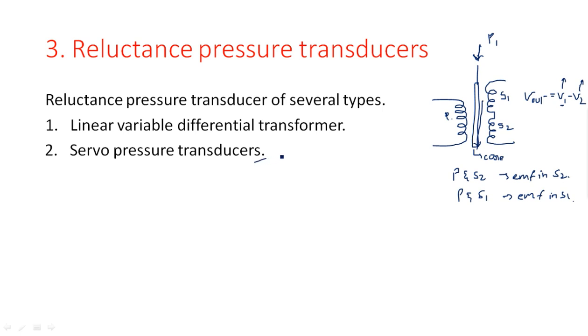Servo pressure transducers use a servo mechanism — a rotational mechanism. Whenever we apply some pressure, the rotation of the needle takes place and the corresponding pressure can be calculated. These two are different measurements using inductive pressure measurement.